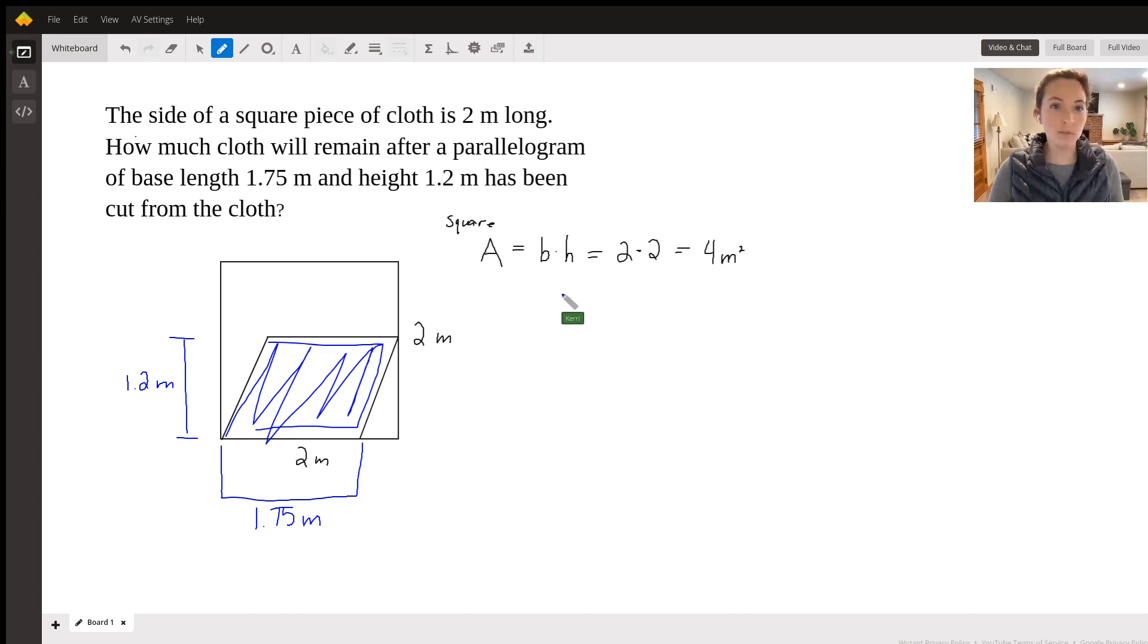And the same formula actually follows through for the parallelogram. I'm just going to abbreviate 'para.' So I want to also calculate the base times height, which would be 1.75 for my base times 1.2 for my height.